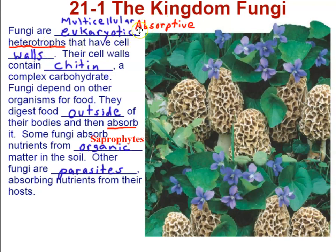This differentiates fungi from animals because animals are ingestive heterotrophs — animals take in food inside their body, digest it inside, and absorb the nutrients. Like other organisms, fungi have cell walls, but different groups have different substances in their walls. Bacteria cell walls are made of peptidoglycan, plant cell walls are made of cellulose, but the cell walls of fungi are made of chitin — the same carbohydrate that makes up the exoskeleton of arthropods. The exoskeleton of insects is also made of chitin.